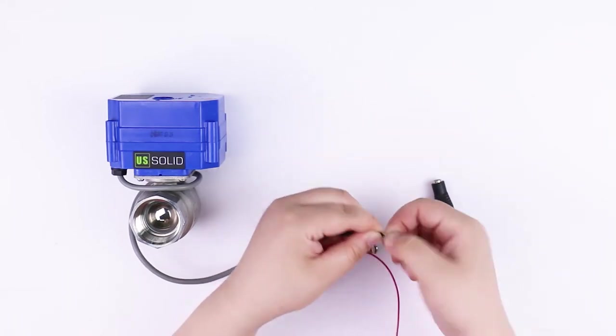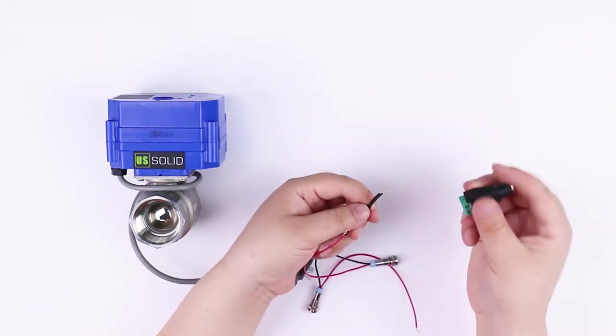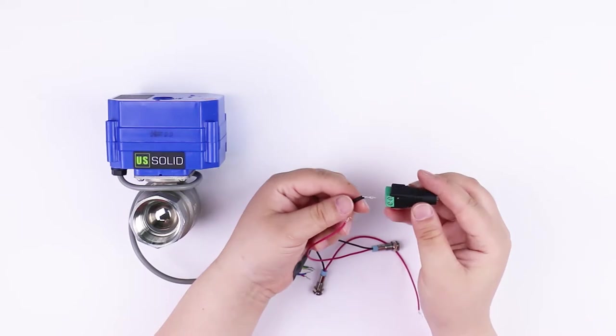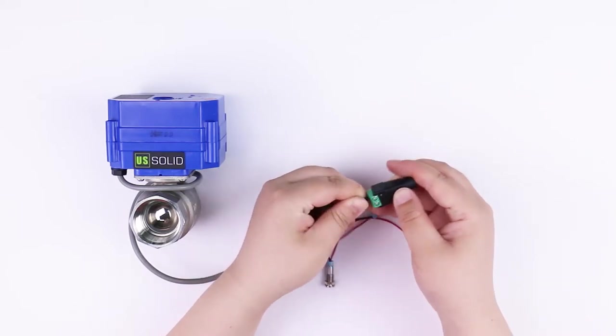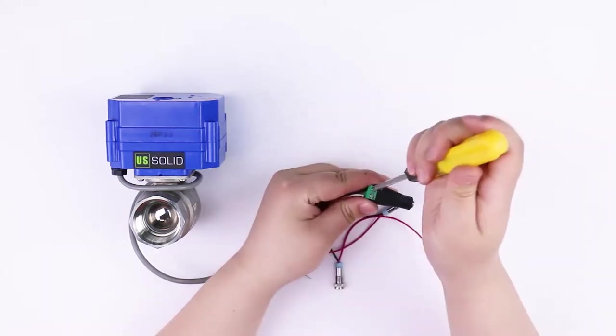One side of the two lights should be connected to the positive power of the DC plug, another side will be connected to the red or green wire of the valve.